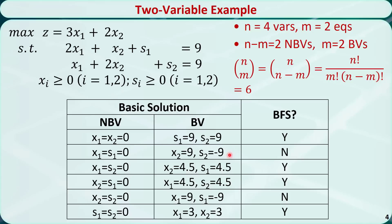You can do this for all other combinations. The second and the fifth are not basic feasible solutions because they have negative values.